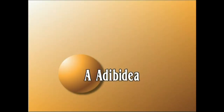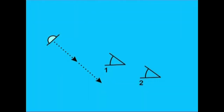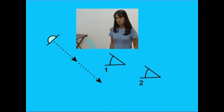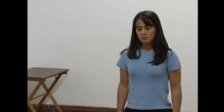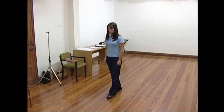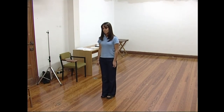Oinez nahiz lasterka doan aktore baten mugimenduaren bukaera izan daiteke une dramatikorik interesgarriena. Horregatik, zehatz-mehatz filmatzea komeniko da. Ikus ditzagun adibide batzuk. Lehenengo kokagunetik, gure aktorea gerriko planoan filmatuko dugu kamerarantz datorrela. Kameratik gertu dagoenean, kuadroaren ezkerretik alde egiten du. Bigarren kokagunetik, ikusmenezko ardatz bereko atzeragoko kokagunetik, aktorea plano orokorrean filmatuko dugu bi pauso eman eta gelditu egiten dela erakusteko. Muntatzerakoan, lehenengo planoa aktorea kuadrotik ateratzen hasten den arte luzatuko dugu. Bigarren planoan, aktorea kuadroaren erdian bi pauso eman eta gero gelditzen dela erakutsiko dugu.